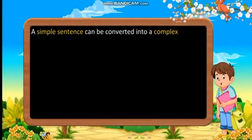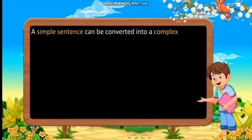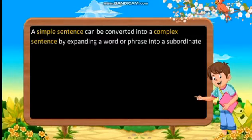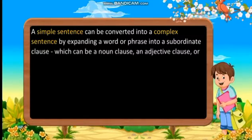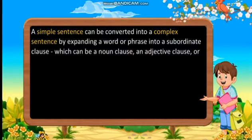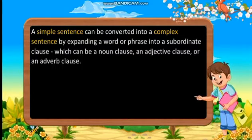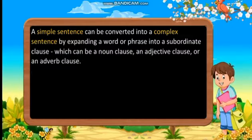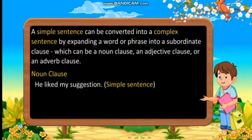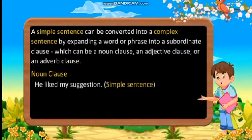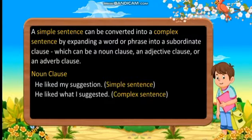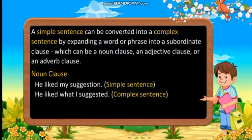A simple sentence can be converted into a complex sentence by expanding a word or phrase into a subordinate clause, which can be a noun clause, an adjective clause or an adverb clause. Noun clause example: 'He liked my suggestion.' — Simple sentence. 'He liked what I suggested.' — Complex sentence.